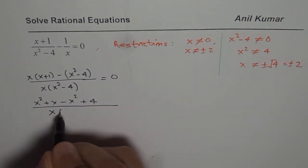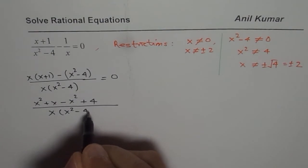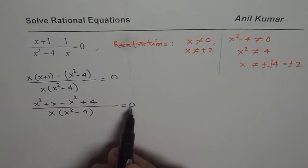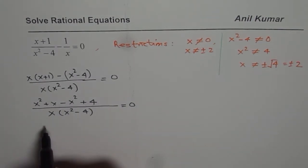And in the denominator, we have x times x squared minus 4 equals to 0. Now for this particular equation to be 0, the numerator should be 0. Perfect.